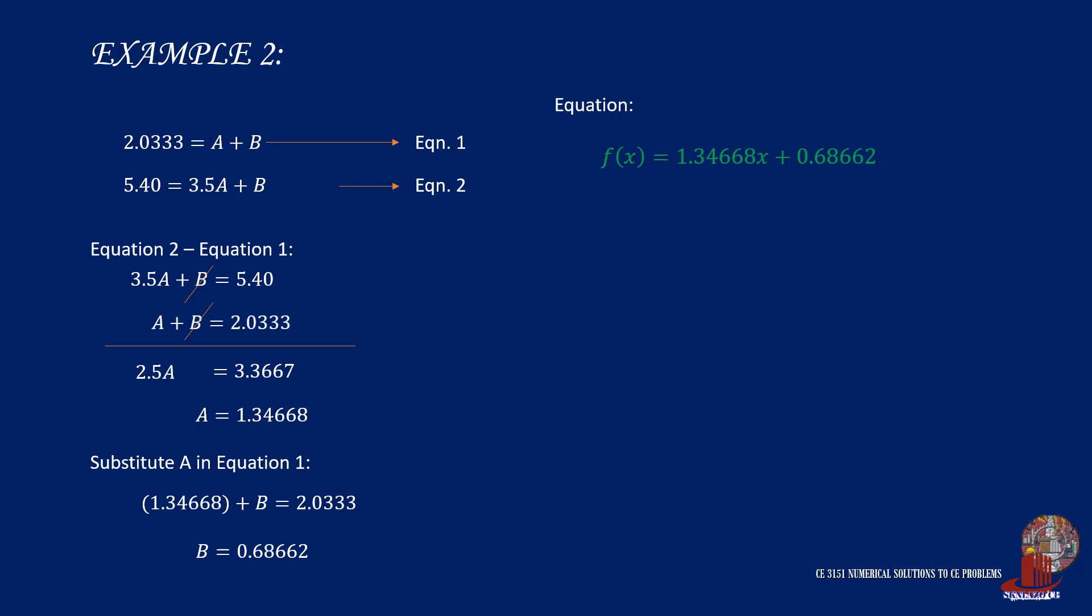Let's check its accuracy. Say we compute for f of 1, which is equal to 1.34668 times 1 plus 0.68662. And this is computed as 2.0333. Compare this value with the true value, then we can say that they are close.